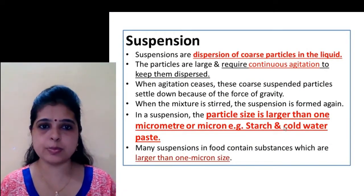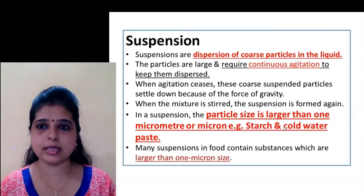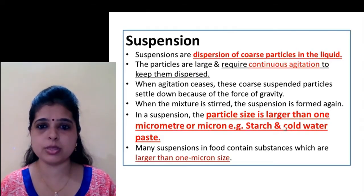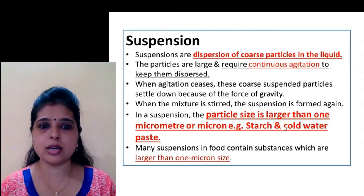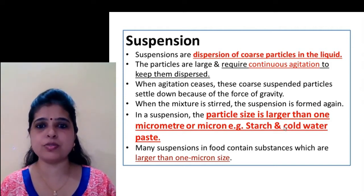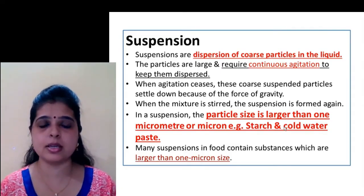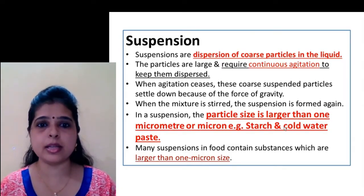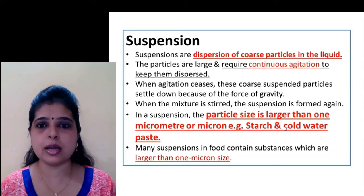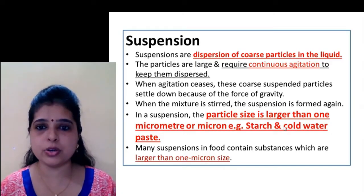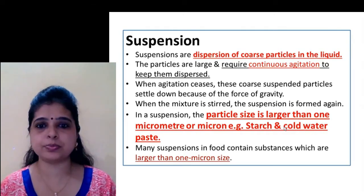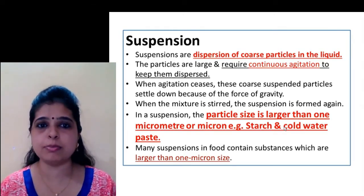Next is suspension. Suspensions are dispersions of coarse particles in a liquid. The particles are generally large in size, larger than 1 micrometer or micron. Many suspensions in food contain substances which are larger than 1 micron size. The example of suspension is starch in cold water paste. In suspension, you have to continuously agitate to keep it dispersed in the solvent. If you leave it, the coarse suspended particles will settle down because of gravity, because of the larger size of the particles.